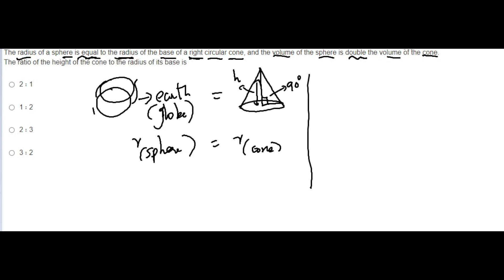They've mentioned that the volume of the sphere is double the volume of the cone. So volume of sphere equals twice the volume of cone.